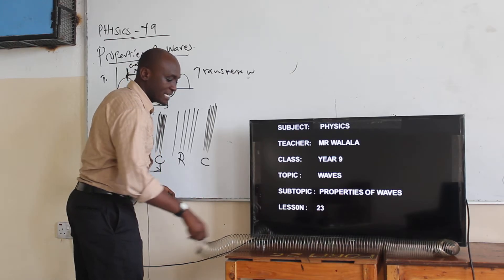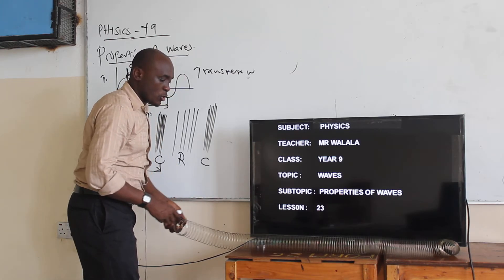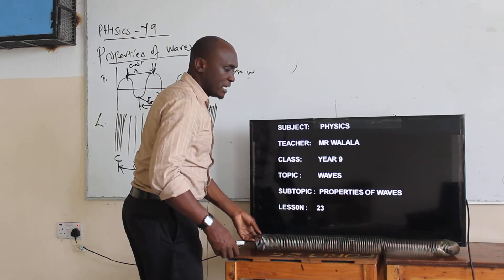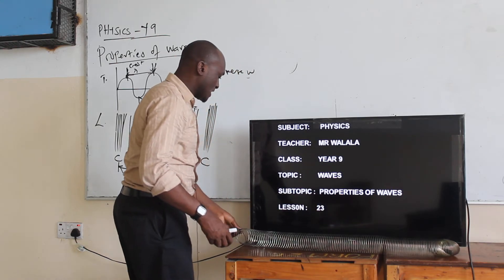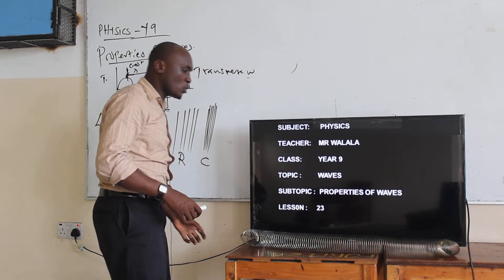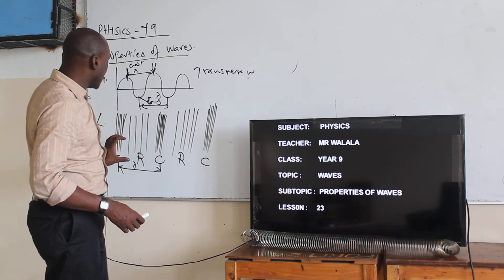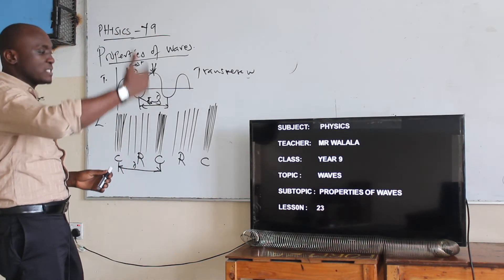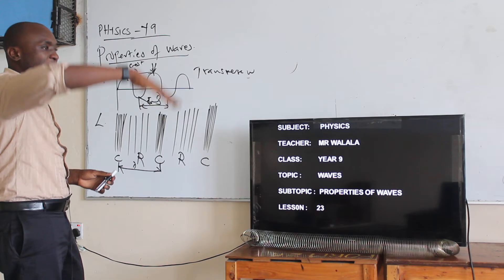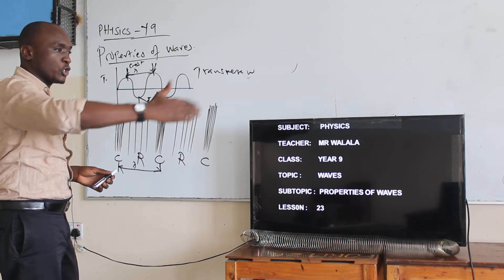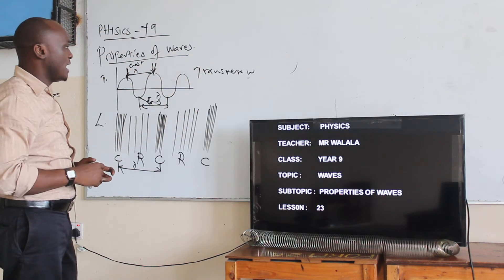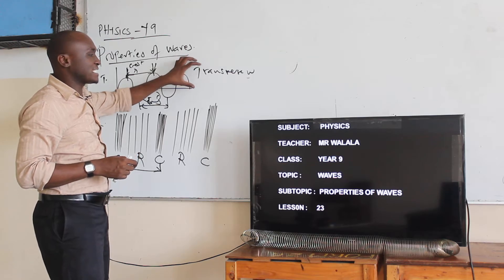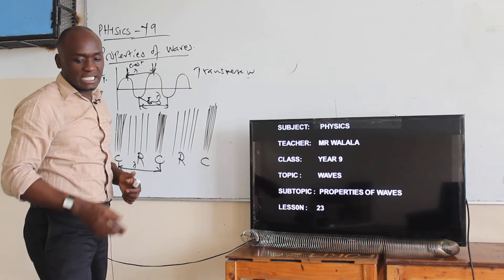You can see from your screen that when I do this, these are compressions and these are rarefactions. It exhibits what I am talking about — we call these compressions and rarefactions. When you see a wave coming perpendicular to the direction of the wave motion, that is what you call the transverse wave.